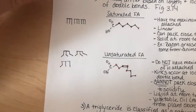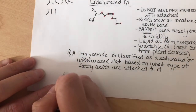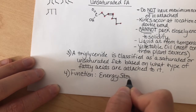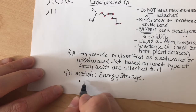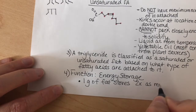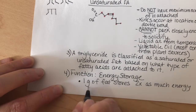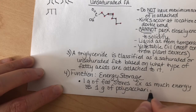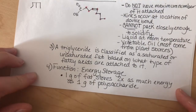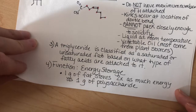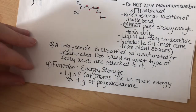The function of a triglyceride is energy storage. One gram of fat stores two times as much energy as one gram of polysaccharide like starch. It's very energy rich, which means we don't need very much of it in our diet. If we have too much fat in our diet, the body will store it in special cells called adipose cells.